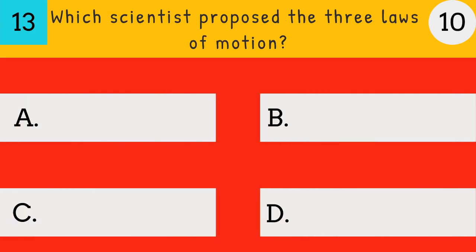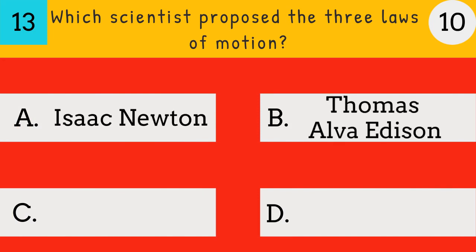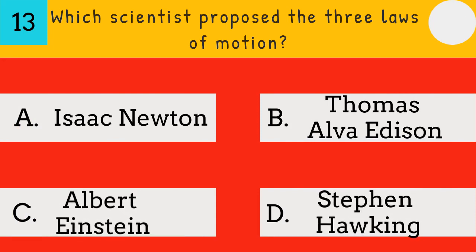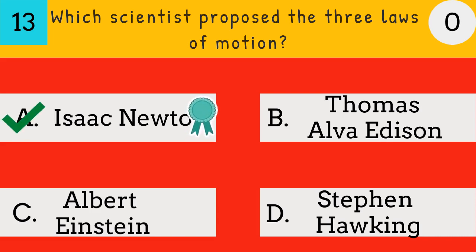Which scientist proposed the three laws of motion? Isaac Newton, Thomas Alva Edison, Albert Einstein, or Stephen Hawking? The answer is Isaac Newton — Isaac Newton proposed the three laws of motion.